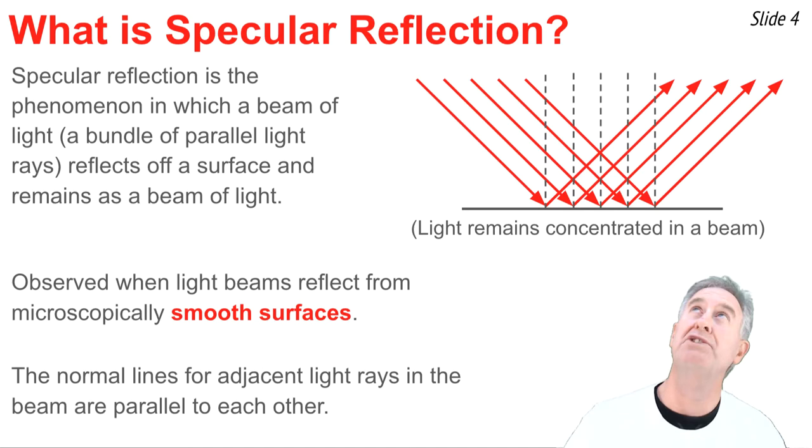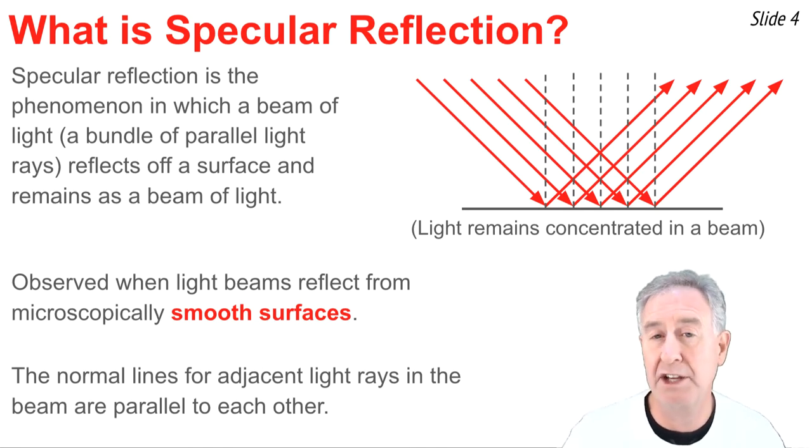For such a surface as the one that you see above, each of these light rays that are incident to the surface strike the surface in a situation in which each of the normal lines is parallel to one another. We'll contrast that now with diffuse reflection.